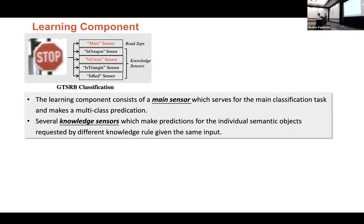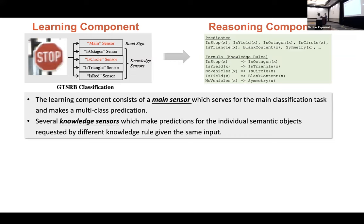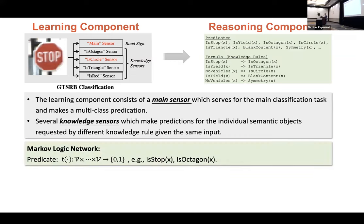So here comes the next thing. How could we do the reasoning based on all the information we have? An intuitive way is that maybe we can just use some probabilistic graph models like a Bayesian network or Markov Logic Network to combine all this information. And here we will use Markov Logic Network as an example. First, we can define a bunch of predicates like IsStop(x). It will return one if the input image, if the sensor outputs stop sign. And then we can also define another predicate IsOctagon(x). If the corresponding sensor outputs octagon, it will be one. And if not, it will be zero.